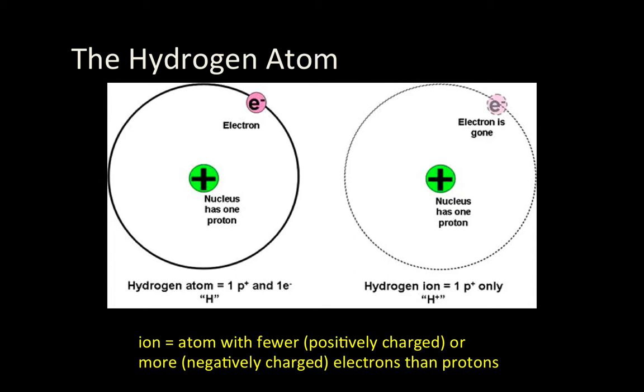The single proton is what makes hydrogen, hydrogen. An element can have as many or as few electrons or neutrons as it wants, but it's the number of protons that determines its identity. Any and every atom with one proton is hydrogen. All atoms with two protons are helium, three lithium, and so on and so forth.